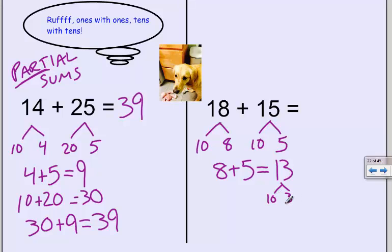Now I'm going to collect my tens. I have one ten, two tens, and a second ten. So I've got to add three tens together.